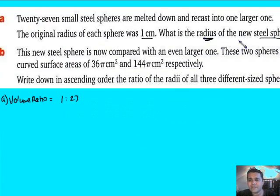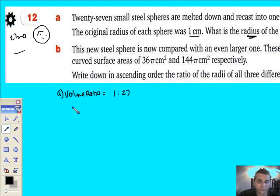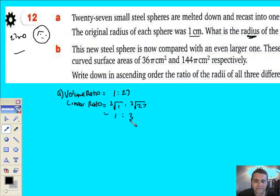But they want me to work out the radius of the bigger steel sphere. In other words, I'm playing with linear ratios. So how do you go from volume down to linear? Cube root it. So linear ratio equals the cube root of 1 compared with the cube root of 27. Cube root of 1 is 1, cube root of 27 is 3.